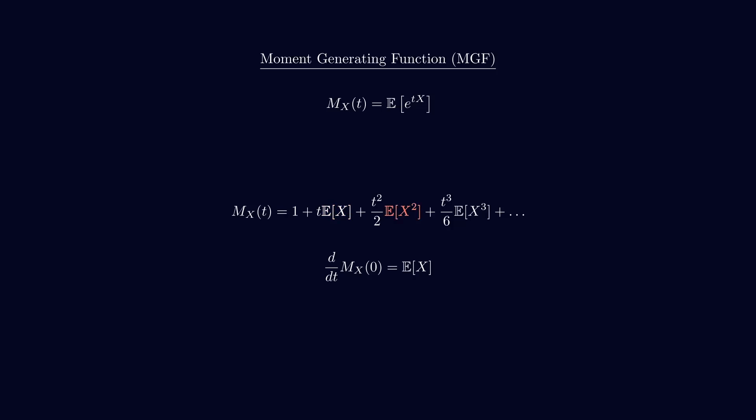Now, for the second moment, we take it a step further. We need to find the second derivative of the MGF. Then, we evaluate the second derivative at t equals 0. This gives us the second moment. So, by using the derivatives of the MGF, we can easily calculate the moments of our random variables. For the first moment, we use the first derivative, and for the second moment, we use the second derivative, and so on.